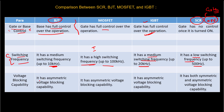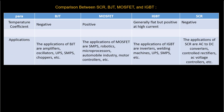Next is voltage blocking capability. BJT has asymmetric voltage blocking capability. MOSFET has asymmetrical voltage blocking capability. IGBT also has asymmetrical voltage blocking capability.